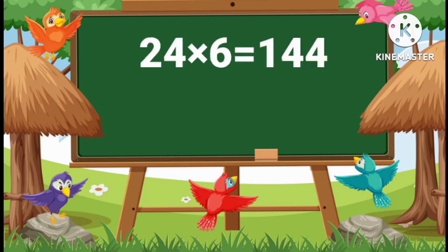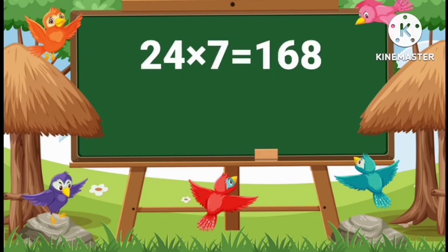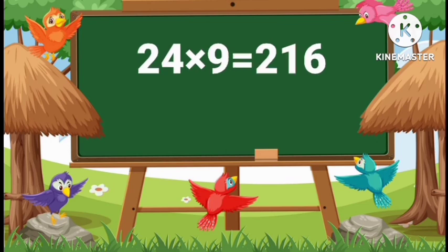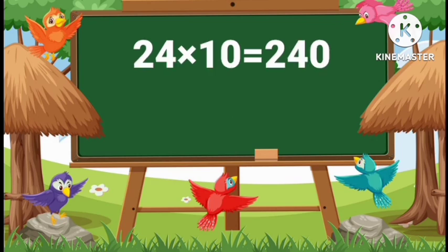24 sixes are 144. 24 sevens are 168. 24 eights are 192. 24 nines are 216. 24 tens are 240.